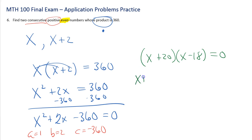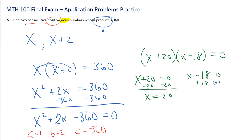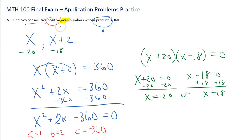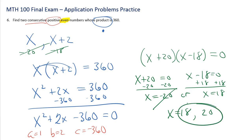Set each factor equal to zero: X plus 20 equals 0 gives X equals negative 20, and X minus 18 equals 0 gives X equals 18. Since the problem says positive numbers, X equals negative 20 doesn't work — negative 20 and negative 18 are both negative. So X equals 18 is the first number, and X plus 2 equals 20 is the second. The two consecutive positive even numbers are 18 and 20.